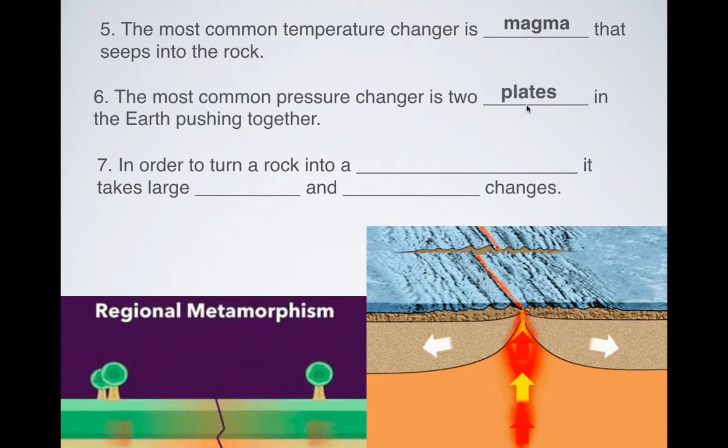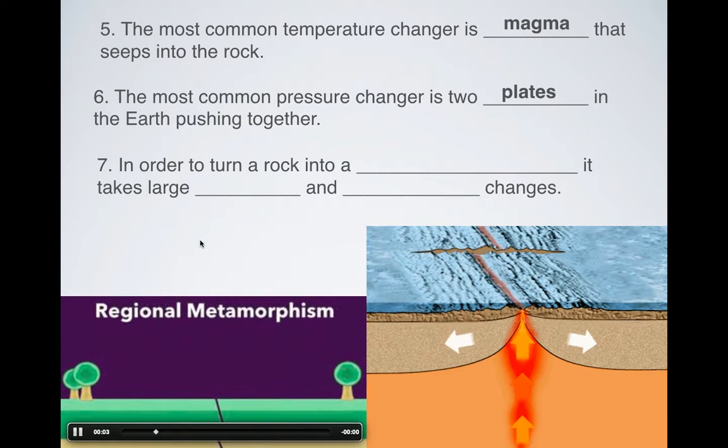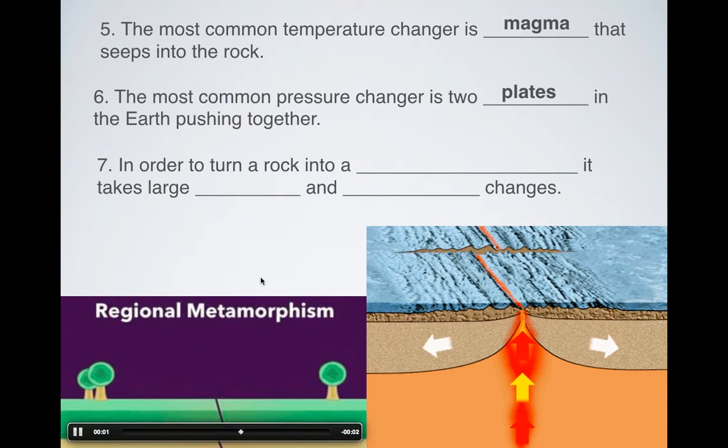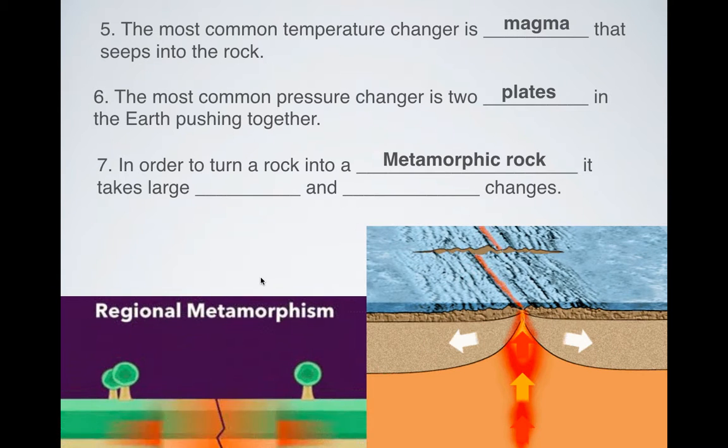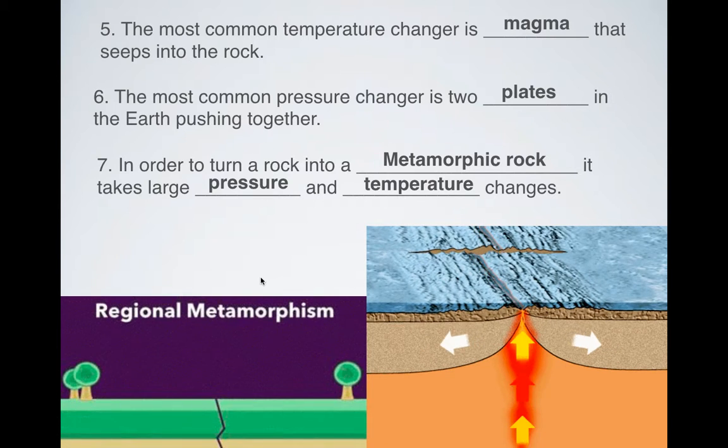The most common pressure changer, that would be plates colliding. You can think about this: it says regional metamorphism. This is two plates that are colliding with one another. And as they're colliding, these are getting warmer. But also, there's pressure building up. And so, remember, in order to turn something into a metamorphic rock, it takes a large pressure and a large temperature change. All right, that's it. So if you have any questions...